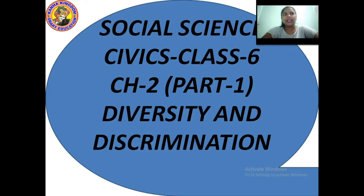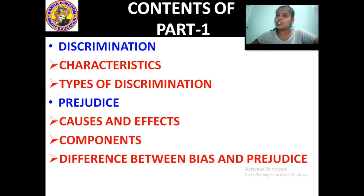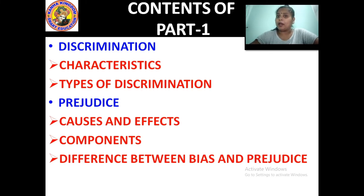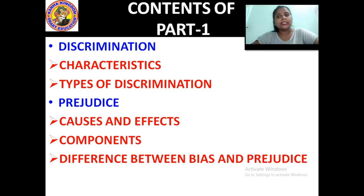Welcome to the class of social science for civics class 6, chapter number 2. The name of the chapter is diversity and discrimination, part 1. In the contents of part 1, we are going to discuss about what is discrimination, its characteristics, types of discrimination, and we will also discuss about prejudice — its causes, effects, components, and the difference between bias and prejudice.